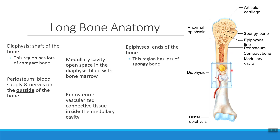On the outside of a long bone, we also have a connective tissue layer. This one is called the periosteum. 'Peri' means around. So my connective tissue on the outside is the periosteum, and my connective tissue on the inside is the endosteum.